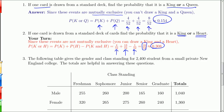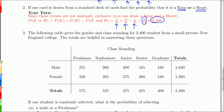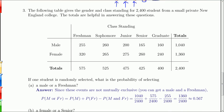Now we'll apply this to larger collections of objects using contingency tables. Suppose we have 2,400 students in a small private New England college. We break the students down by gender — male or female — and by class standing: freshman, sophomore, junior, senior, and graduate students. This contingency table tells us about the demographics of this particular college.